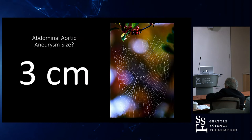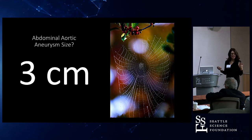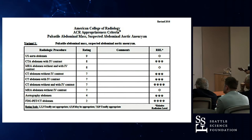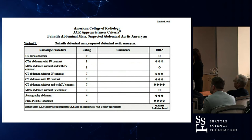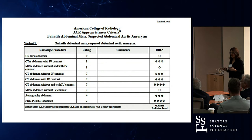Abdominal aortic aneurysm — how do we determine the size? It's 3 centimeters — for everybody. That's not when you operate, but that's when you start following. For screening, an ultrasound is good, especially in a thin patient. If the patient's presenting in the emergency department, we get a CTA abdomen — that's the definitive study, but an ultrasound can be very good.